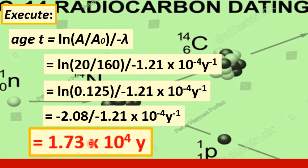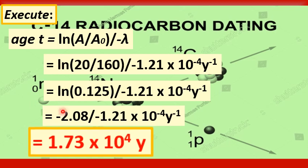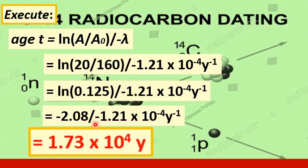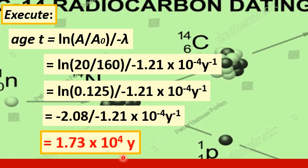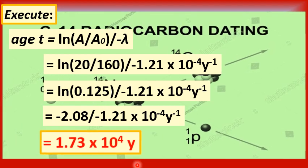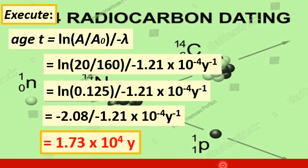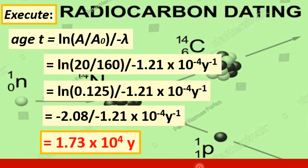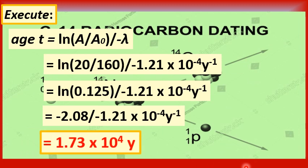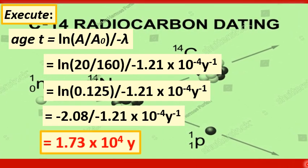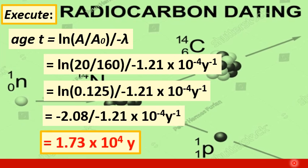This is our computed value of the time t which represents the age or the approximate age of the artifact. So we conclude that the approximate age of the artifact is 17,300 years. That is the organism died more or less 17,300 years ago, which is about 15,276 years before Christ or BC, and this is the glaciation period commonly called the ice age.